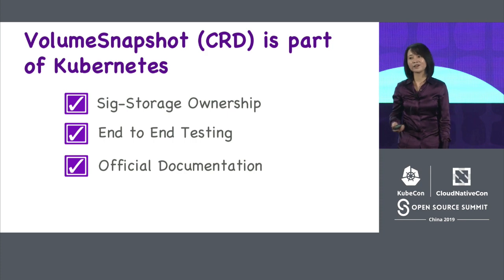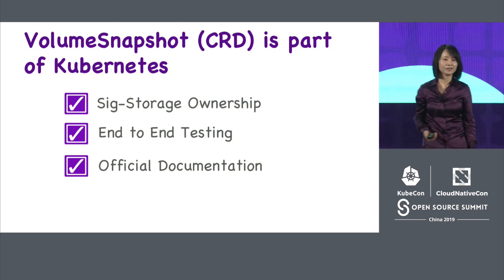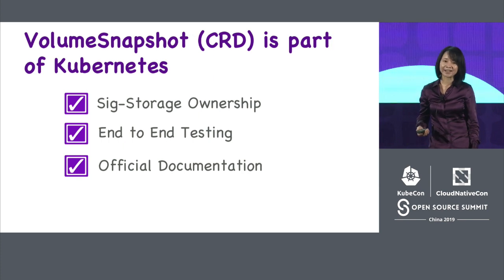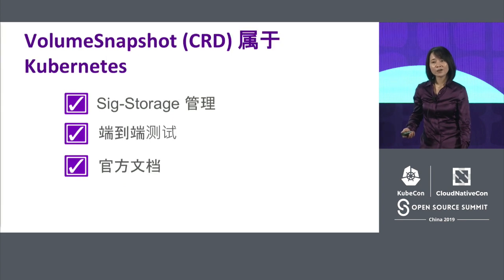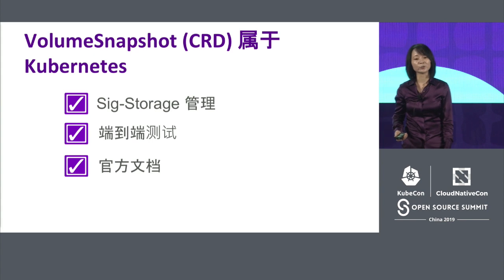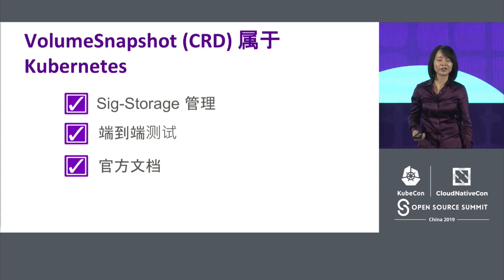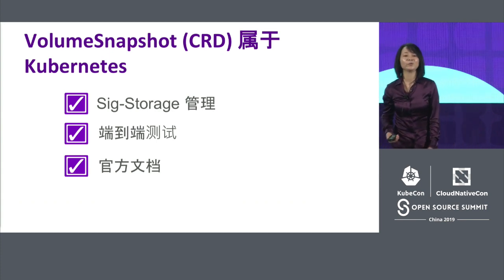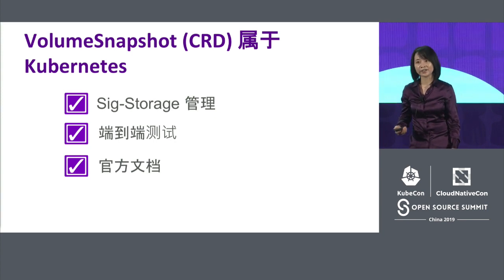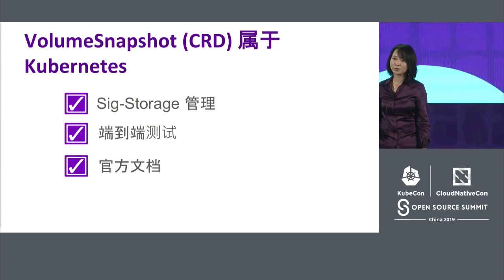Volume Snapshot CRD is part of Kubernetes, owned by SIG Storage. It has end-to-end testing, official documentation, and users can use it just like any other Kubernetes storage feature like persistent volumes. More and more CSI drivers have implemented the Snapshot feature, and people have started implementing more advanced functionalities like data protection and disaster recovery on top of it.